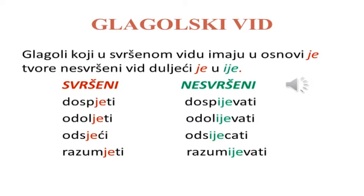Evo još nekih informacija kojima ćete upotpuniti svoje znanje vezano za glagole i glagolski vid. Glagoli koji u svršenom vidu imaju u osnovi je, tvore nesvršeni vid duljeći je u ije. Evo nekoliko primjera: svršeni oblik glagola dospijeti u nesvršenom obliku glasit će dospijevati; odoljeti – odolijevati; odsjeći – odsjecati; razumijeti – razumijevati.